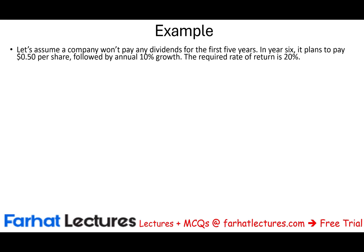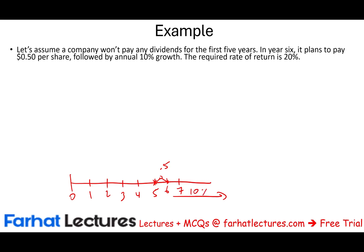Let's assume a company won't pay any dividend for the first five years. Looking at a timeline: years 0 through 5 have no dividend. In year six, it plans to pay 50 cents per share. From year six onward, the dividend grows at g = 10%, continuing theoretically to infinity. The required rate of return is 20%. Can we compute the price of this stock?